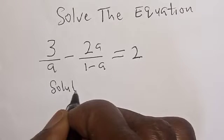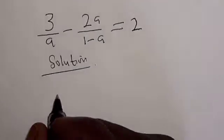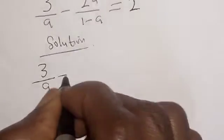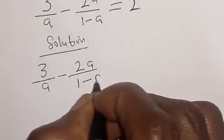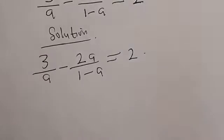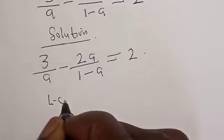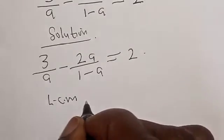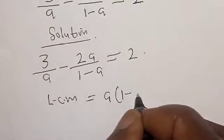Solution. We have the given equation: 3 divided by a minus 2a divided by 1 minus a is equal to 2. Then we look for the LCM. The LCM of this equation is a into 1 minus a.